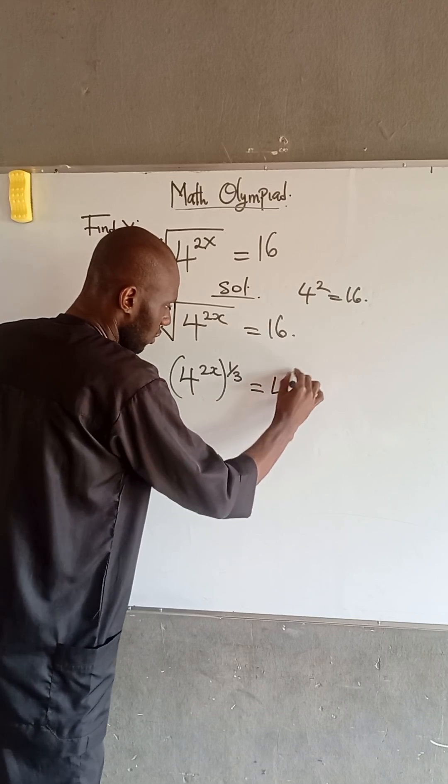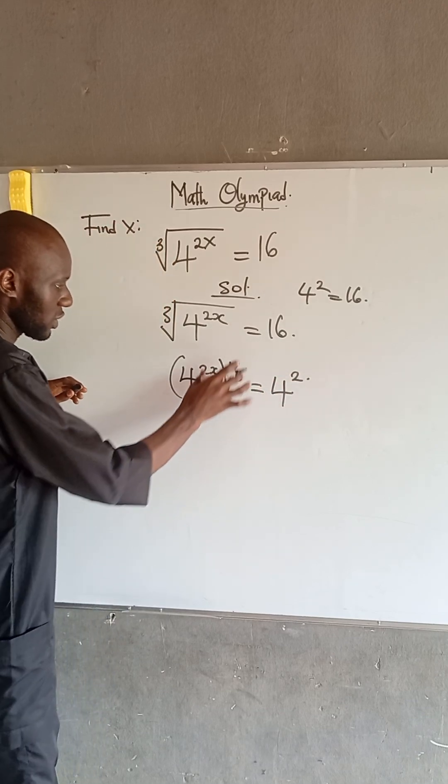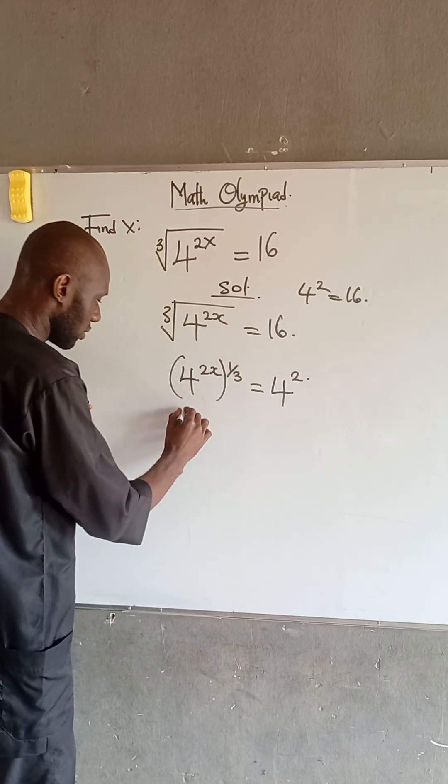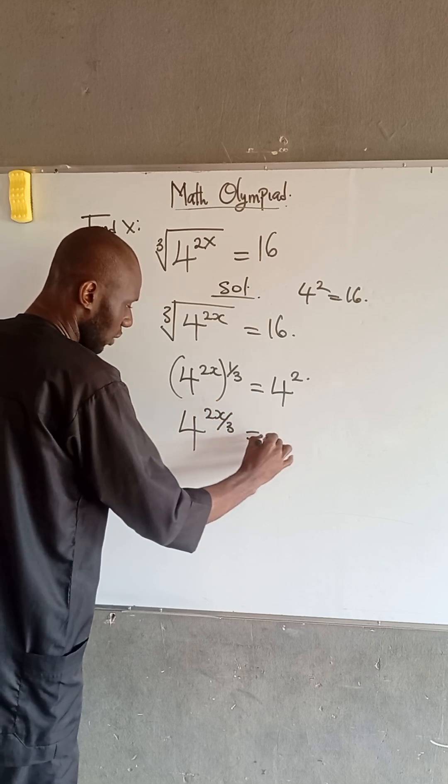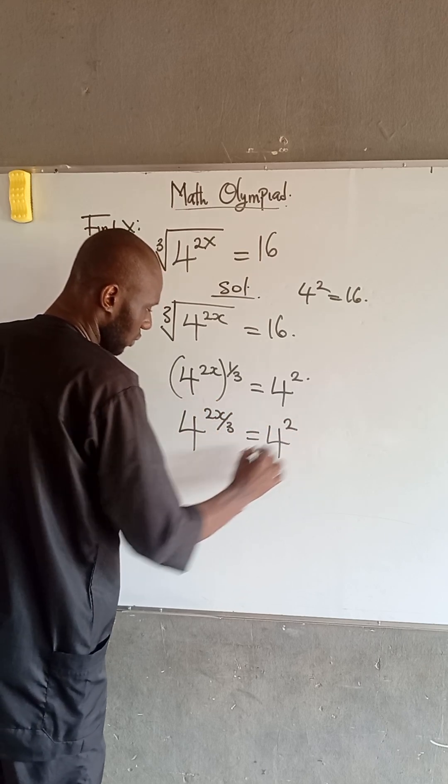So therefore, we have 4 squared. Now, if we simplify the index here, this becomes 4 to the power of 2x divided by 3, equal to 4 to the power of 2.